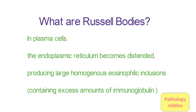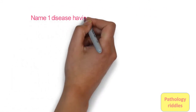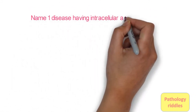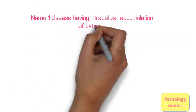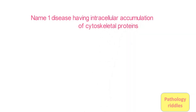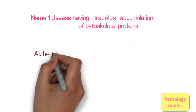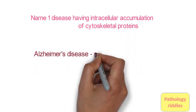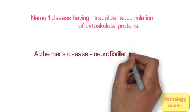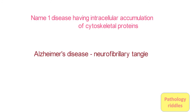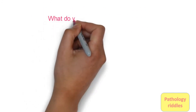Question 11: Name one disease having intracellular accumulation of cytoskeletal protein. The answer is Alzheimer's disease, which has neurofibrillary tangles.